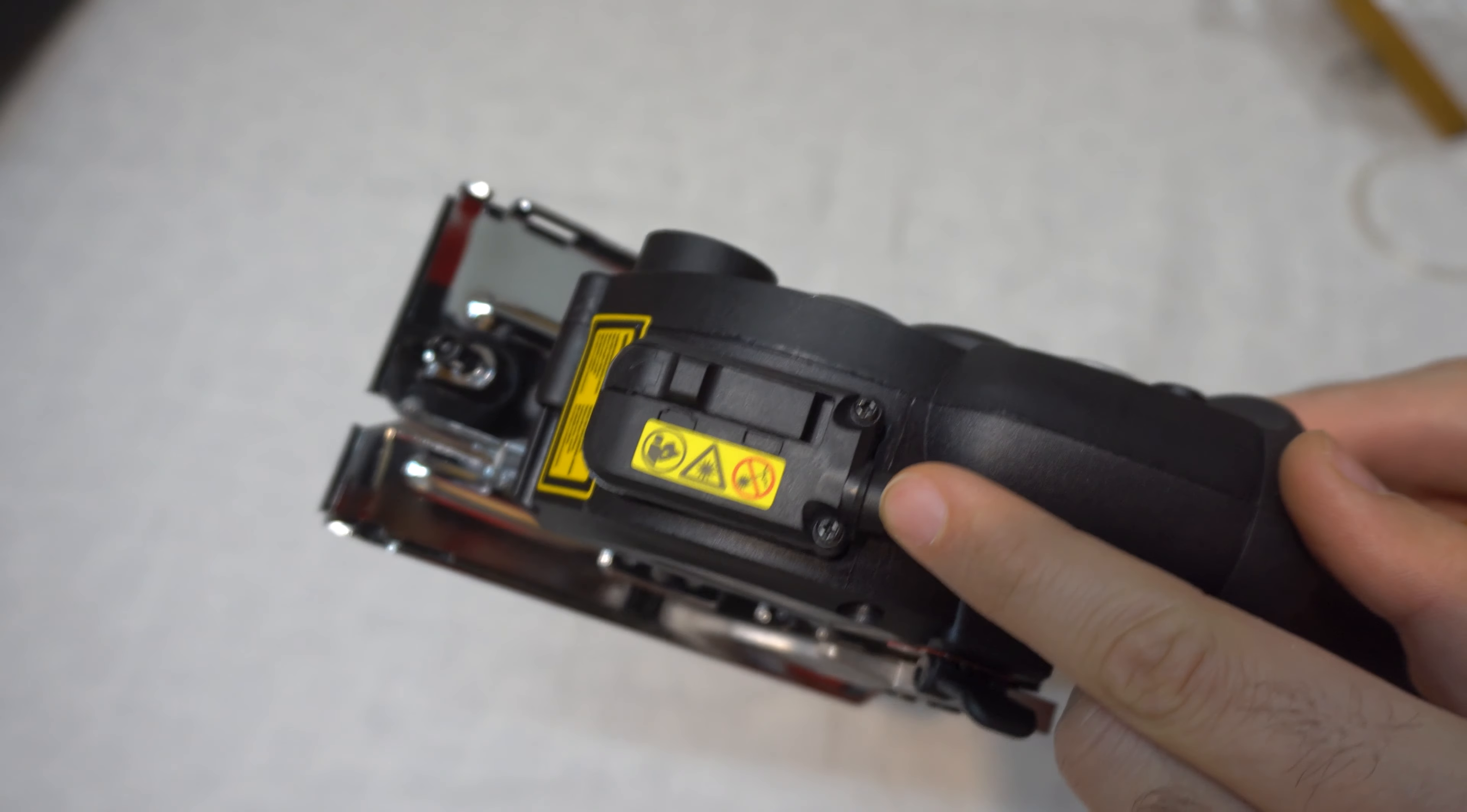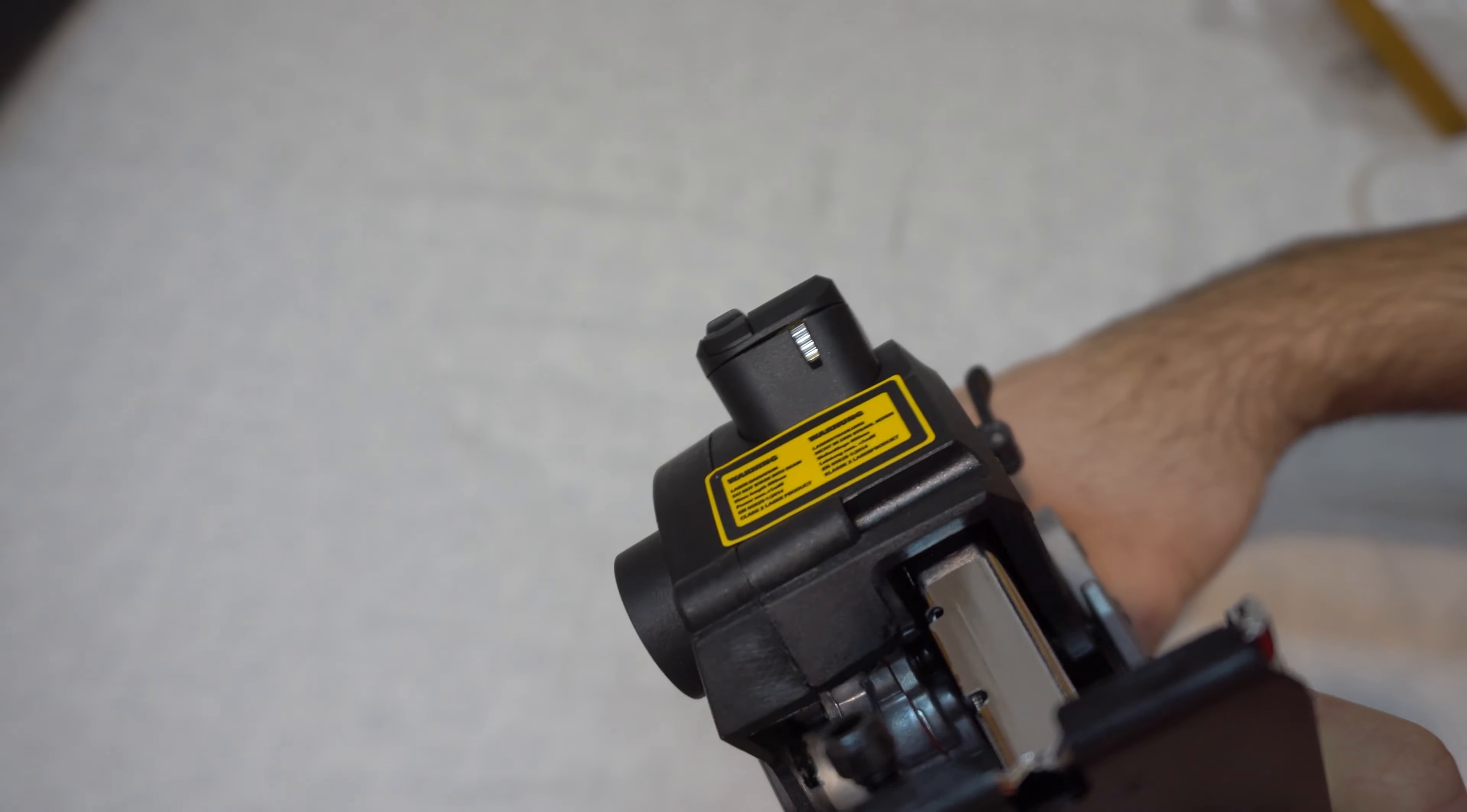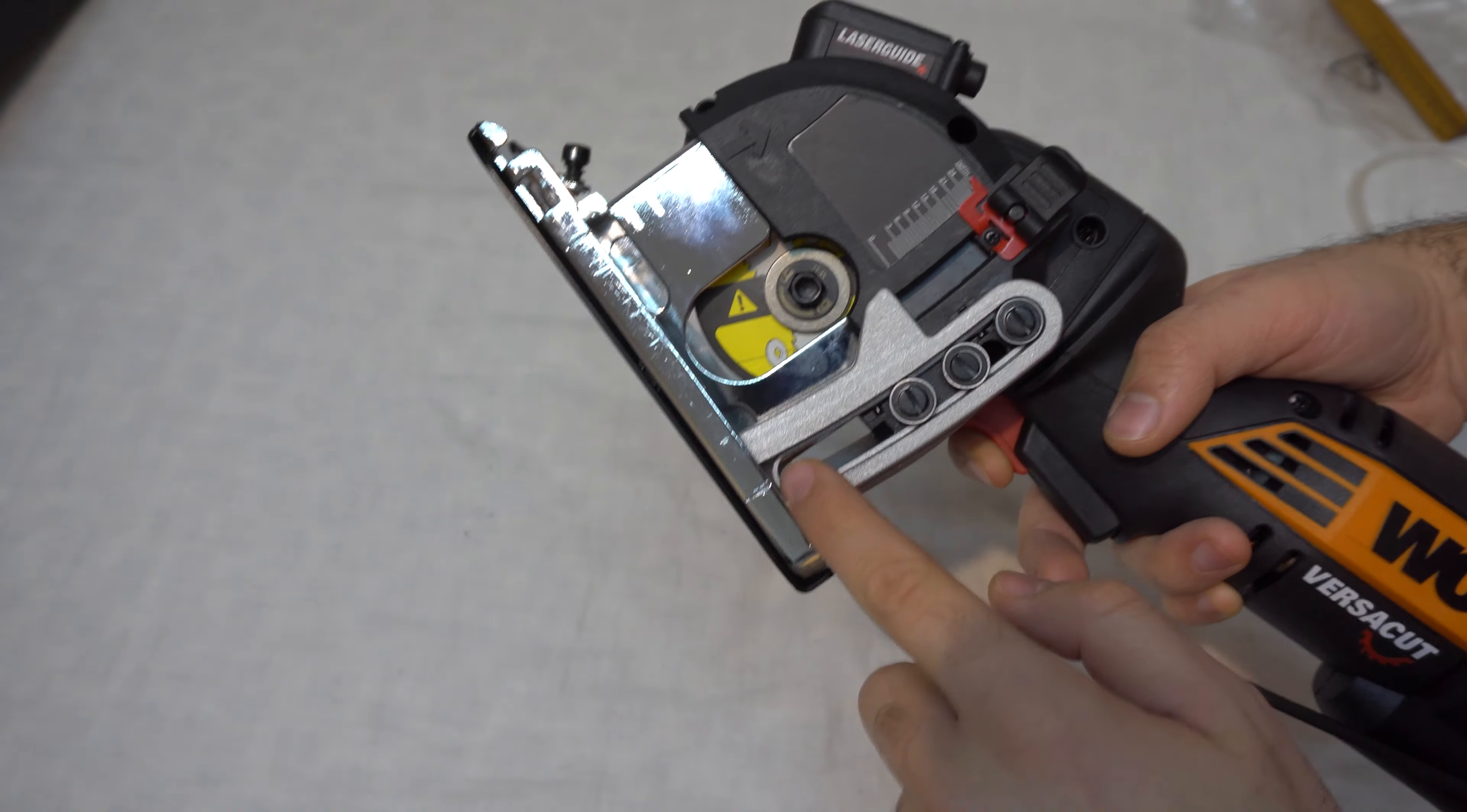That's the laser on the top. It has an on-off button. So there's no support here in the front from where it rotates, but it rotates on these wheels.